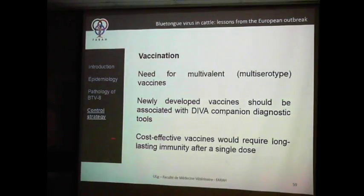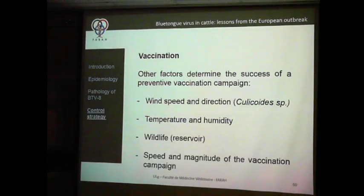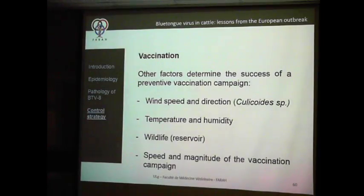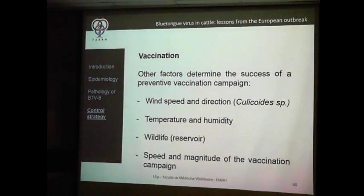Cost-effective vaccines will require long-lasting immunity, unlike inactivated vaccines that require several doses. Always keep in mind that other factors determine the success of vaccination campaigns: wind speed and direction impacting Culicoides movement — which we cannot control — humidity, wildlife as a reservoir, and the speed and magnitude of the vaccination campaign. During the new outbreak in France, a quick vaccination response in Spain and parts of France was able to limit and contain transmission — as soon as first cases appear, apply a vaccination plan and it will be efficient.